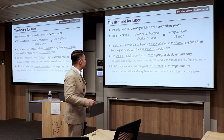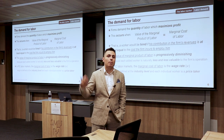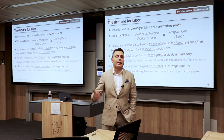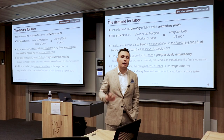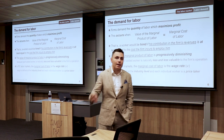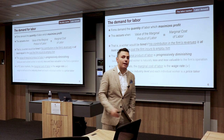Assume the wage rate is $80 per day and capital is fixed. The first worker contributes $200 worth of product — hired. The second contributes $130 — hired. The third contributes $100 — hired. The fourth contributes $90 — hired. The fifth contributes only $50, which is below the $80 wage — not hired. So at a wage of $95, the firm would hire exactly three workers.